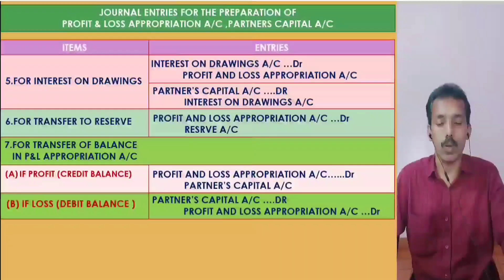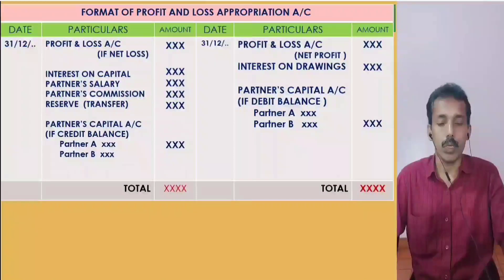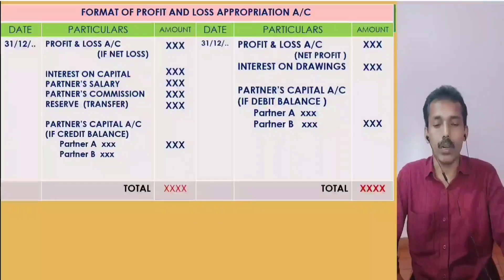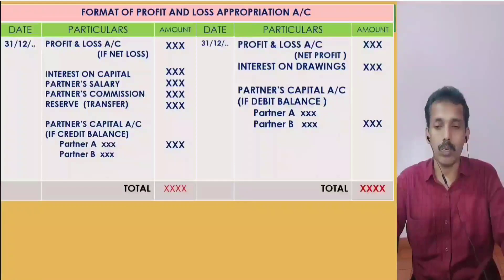The Profit and Loss Appropriation Account format includes date, particulars, and amount columns. On the credit side: Profit and Loss Account (Net Profit) and interest on drawings. On the debit side: interest on capital, partner's salary, partner's commission, and transfer to reserve if any.